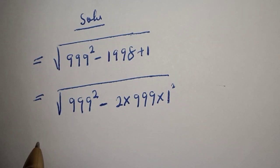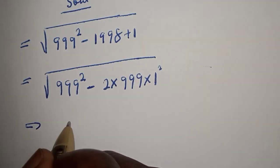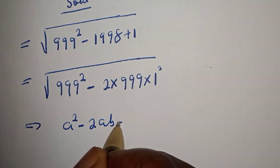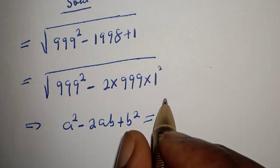Take note of this: if you have a squared minus 2ab plus b squared, it is equal to (a minus b) squared.